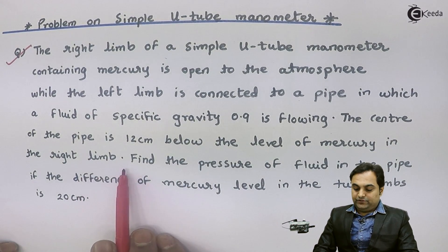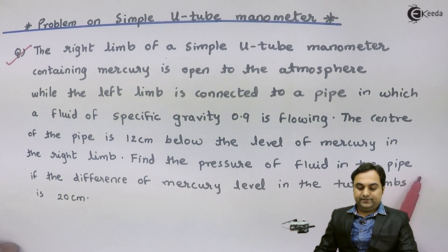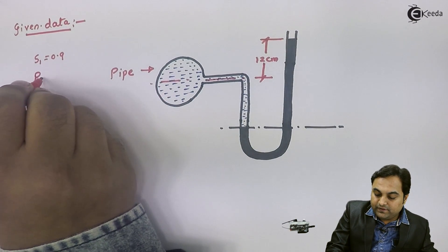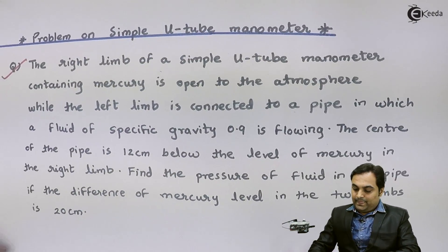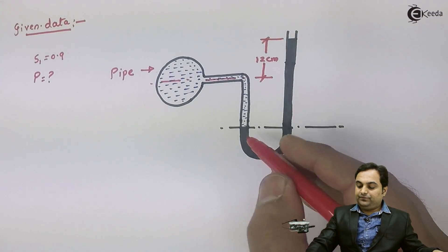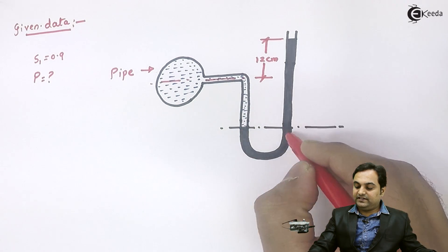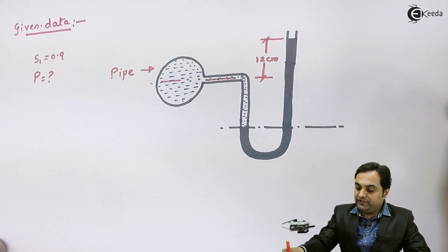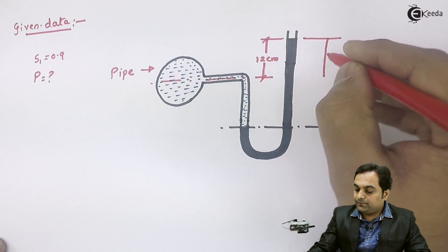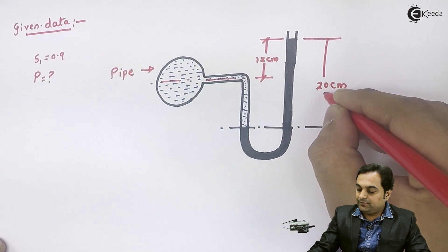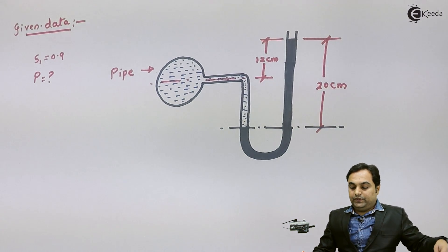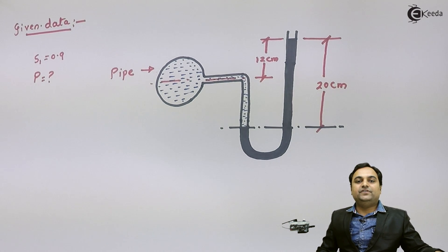We have to find the pressure of fluid in the pipe, which I will denote by letter P. The difference of mercury level in the two limbs — left and right — is 20 centimeters. So I can mark the level difference as 20 centimeters on the diagram.